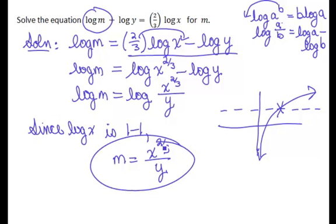So by using what we know about solving equations, isolating the term involving the variable we're interested in, and using a couple of the basic properties of logs, in addition to the fact that log functions are one-to-one, we see that in this equation, m is equal to x to the two-thirds power divided by y.